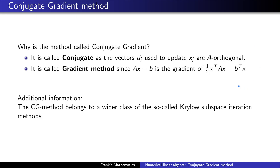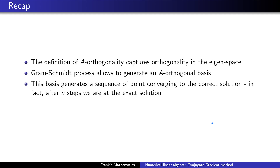For those interested, the conjugate gradient method belongs to a wider class called Krylov subspace iteration methods. Just search 'Krylov subspace iteration' and you'll find a lot of literature. To recap: A-orthogonality captures orthogonality inside the eigenspace; Gram-Schmidt allows us to generate an A-orthogonal basis; and after n steps, the conjugate gradient method gives the exact solution. I hope you've enjoyed the video — if you have any questions, write them in the comments. See you around, have fun, and cheers!